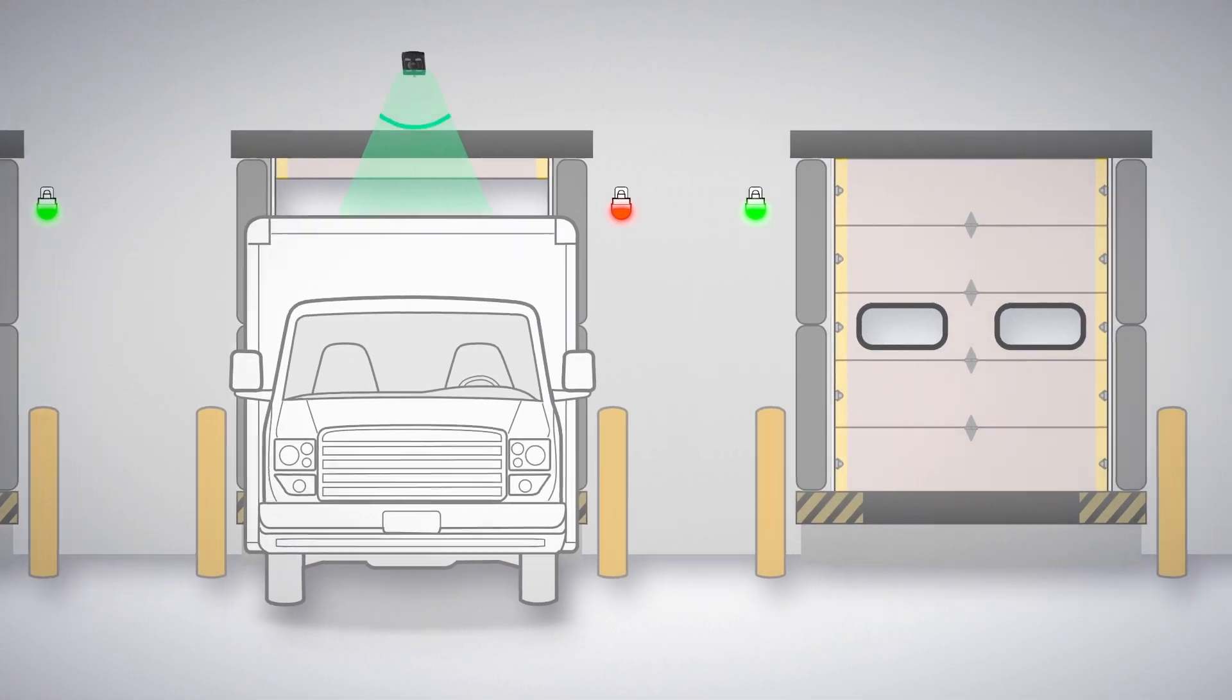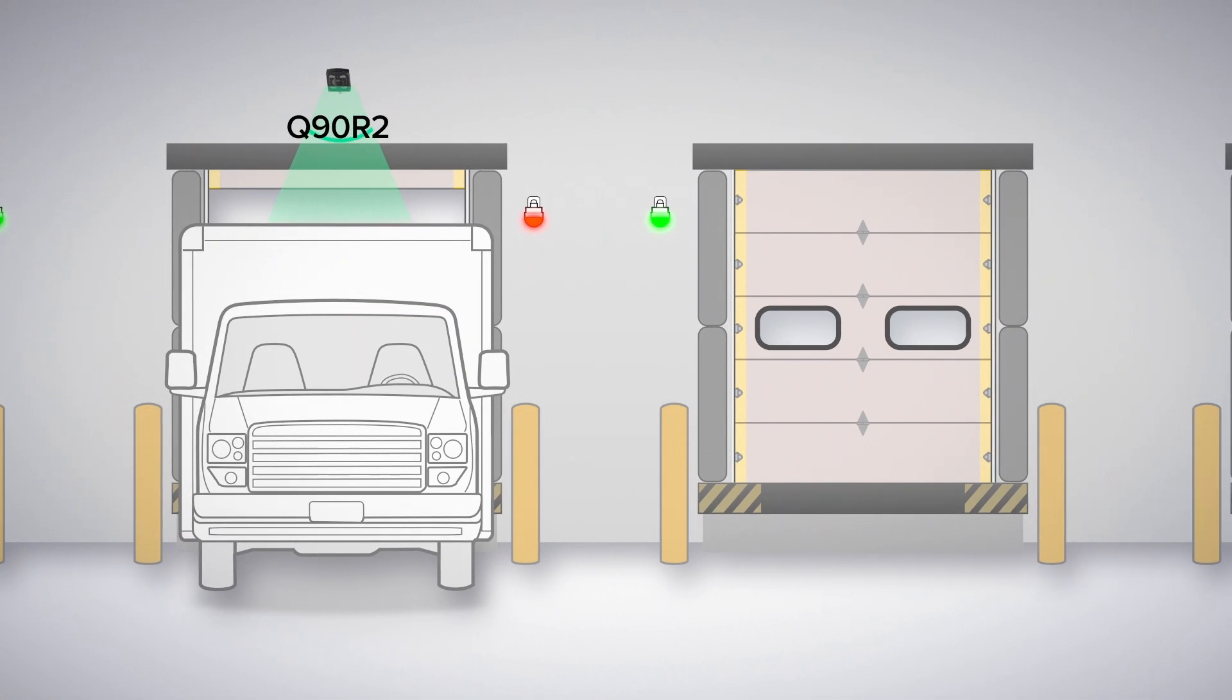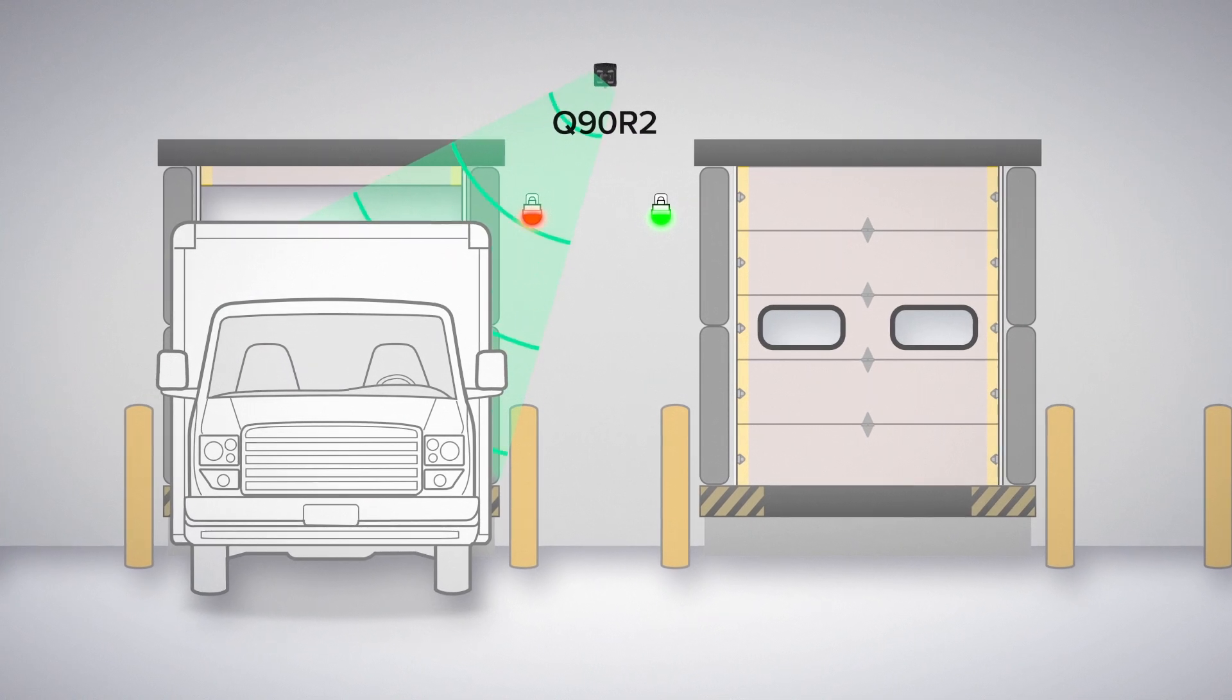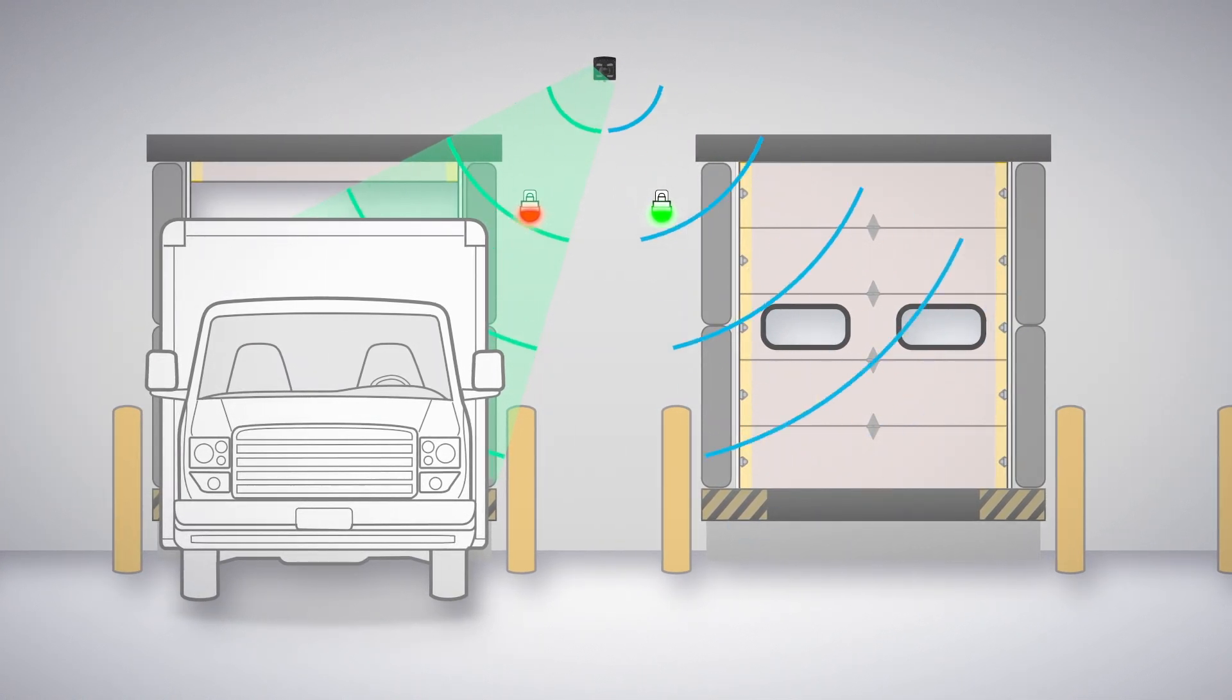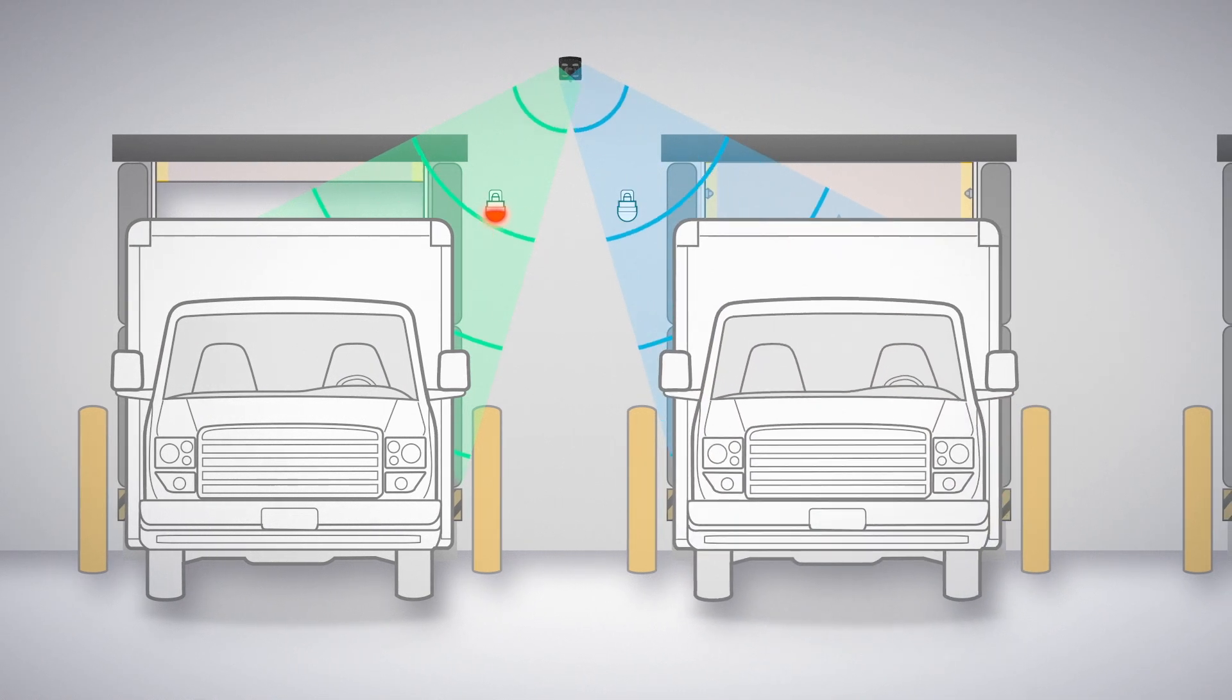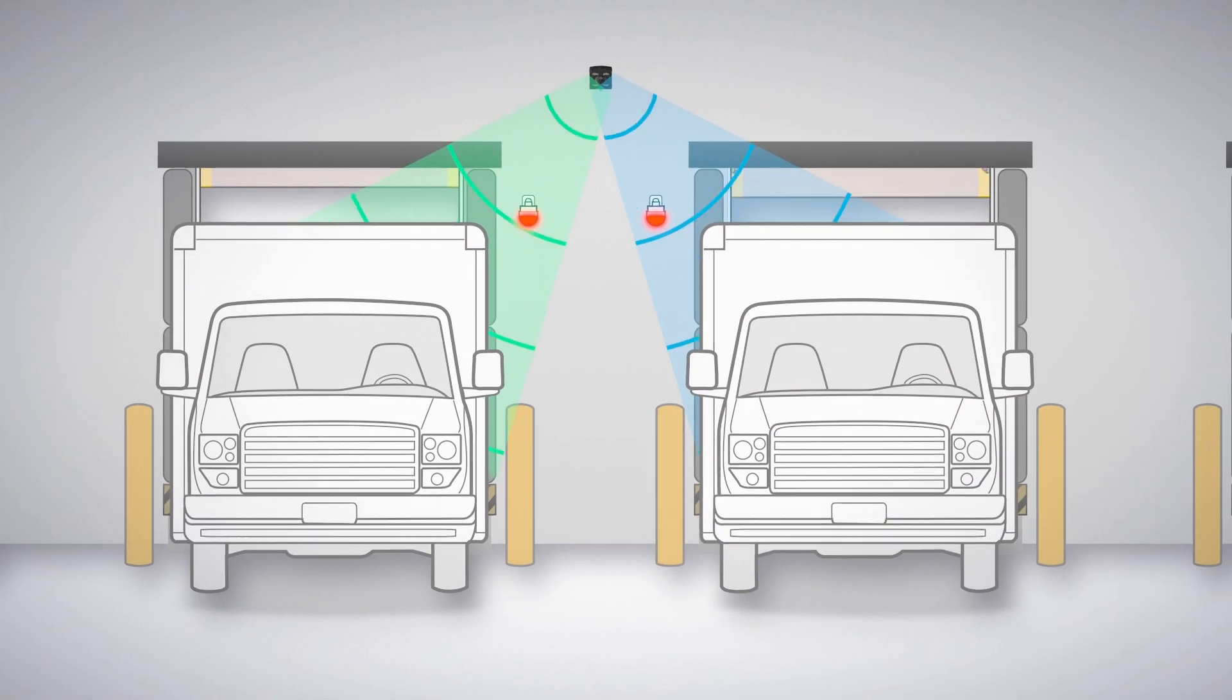Or, when there are two nearby applications to be monitored, consider installing a single Q90R2. With its wide 120-degree field of view, the Q90R2 can be configured to monitor each dock bay as its own individual zone.